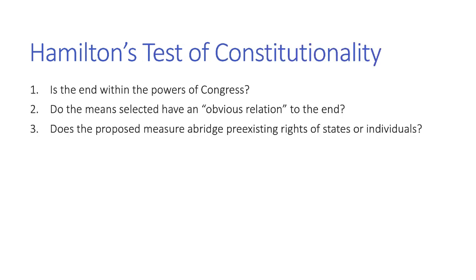Hamilton's test of constitutionality asks three questions: first, is the end within the powers of Congress? Second, does the means selected have an obvious relation to the end? Third, does the proposed measure abridge pre-existing rights of states or individuals? If all three questions can be answered satisfactorily, then the Second National Bank is constitutional.